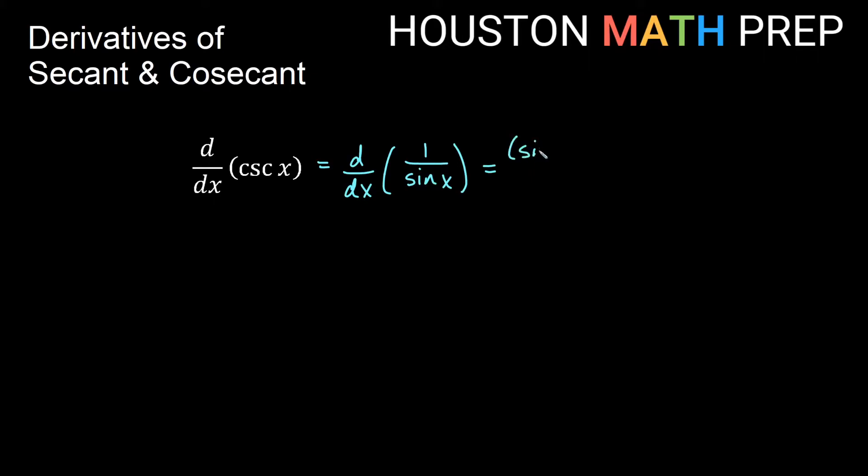So we have low times d high, derivative of the high function is zero, minus high, which is 1, d low, the derivative of sine x is cosine x, all over the square of what lies below. And what lies below is sine x. So we have sine squared x as our bottom function squared.